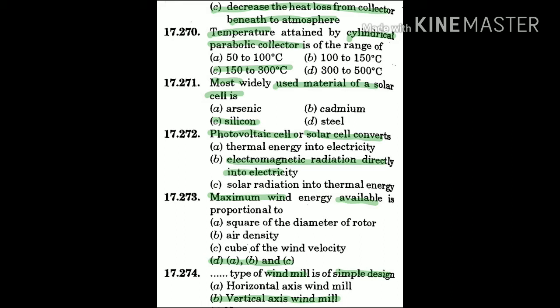Question 271: The most widely used material for a solar cell is — the answer is C: silicon.